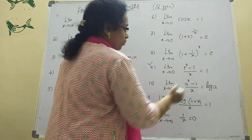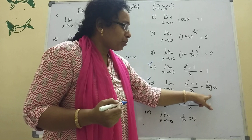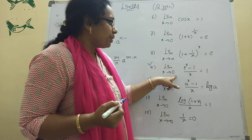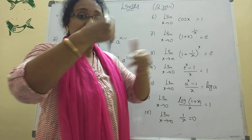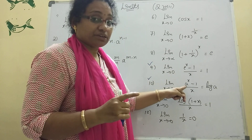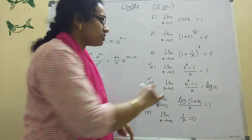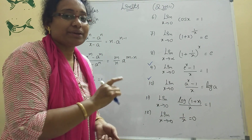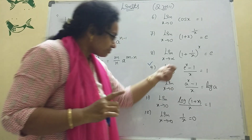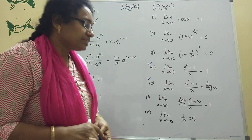Formula 9: limit x tends to 0, e power x minus 1 divided by x equals 1. Formula 10: limit x tends to 0, a power x minus 1 divided by x equals log a. Remember: e power 0 is 1, so 1 minus 1 is 0 over 0 in limits gives 1. For a power x, it gives log a because a is another constant. Formula 11: limit x tends to 0, log(1 plus x) divided by x equals 1.